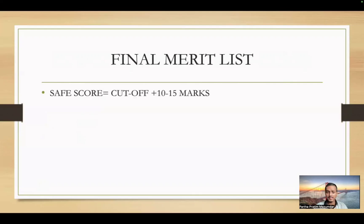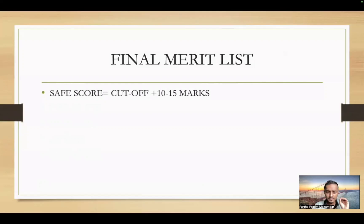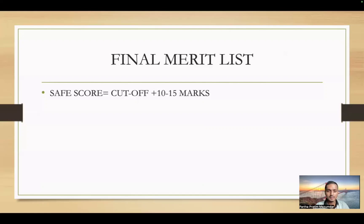Regarding the final merit list: the cut-off score alone won't determine the final merit list. Getting 2 extra points above the cut-off is better for the final merit list. If your score is on the border — right at the cut-off line — it is risky. If you are in the middle range, there are better chances. Those in the middle range have more opportunity to make it into the final merit list, so think carefully about your position.